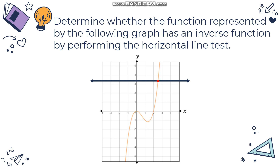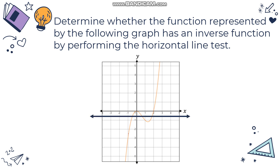Remember, you have to make sure that if we put the horizontal line anywhere on the graph it will always intersect at exactly one point. So we can't assume right away that this is one-to-one — we have to try the horizontal line on other parts of the graph. If you put the horizontal line on the lower part, it still intersects at exactly one point. But on the middle part of the graph, you can see it intersects the graph more than once.